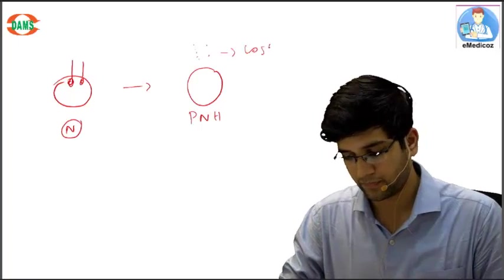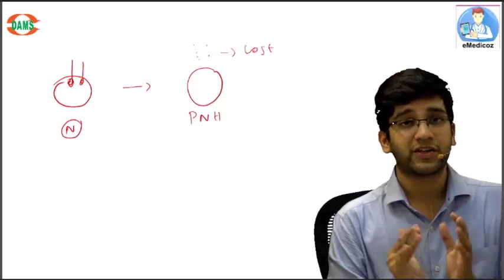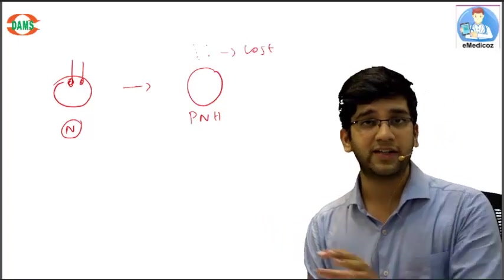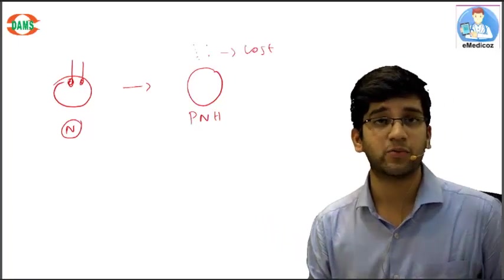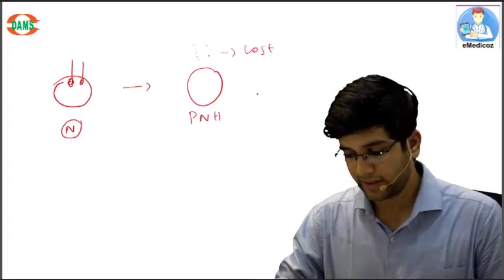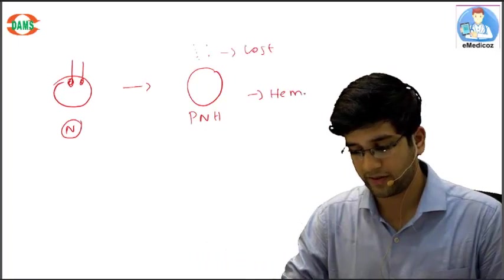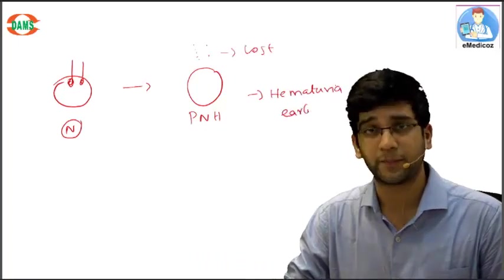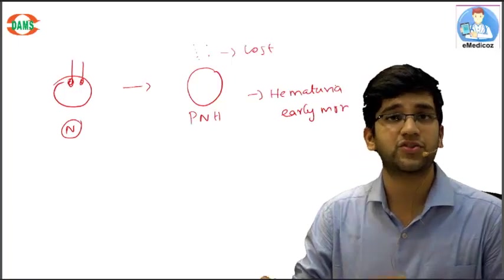In case of PNH, the glycophosphatidylinositol is not there, so CD55 and 59 cannot bind and they are lost. When there's no protection of CD55 and 59, every time a person sleeps overnight there's going to be intravascular hemolysis that's reflected in the form of hematuria in the early morning. That's about the pathogenesis of PNH.